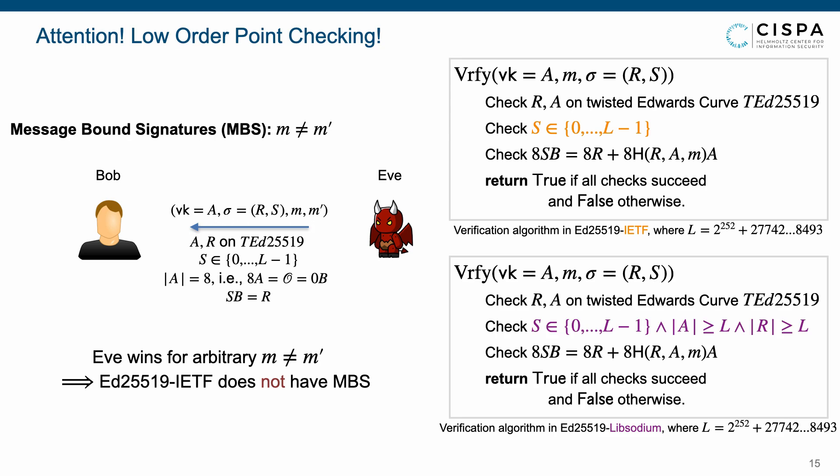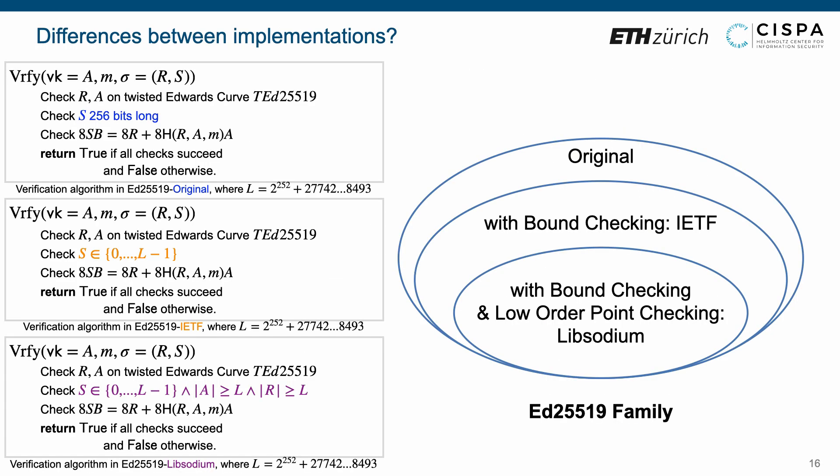The Libsodium variant prevents this attack by low order point checking. In addition to bound checking, the Libsodium version rejects the points a and r, which have order smaller than l. Now, we can easily find the differences between these three implementations.